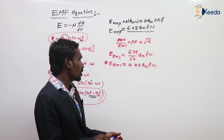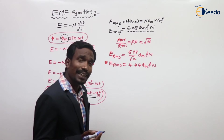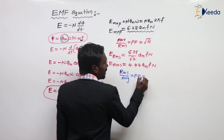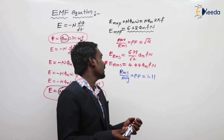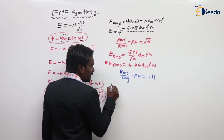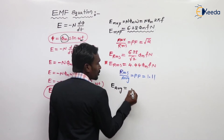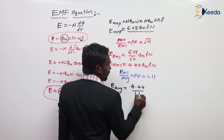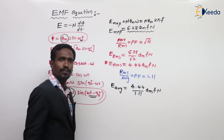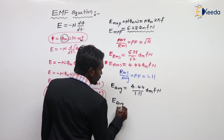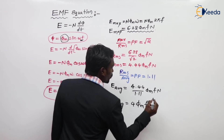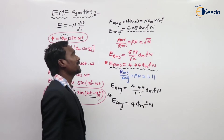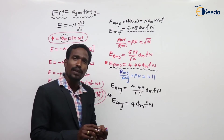If they ask for E average, we know that form factor = RMS / average = 1.11 for sinusoidal analysis. So E average = ERMS / 1.11 = 4.44 / 1.11 × φm × f × N = 4 × φm × f × N. This is the E average value. So we have E maximum, E RMS, and E average — all equations for a single-phase transformer.